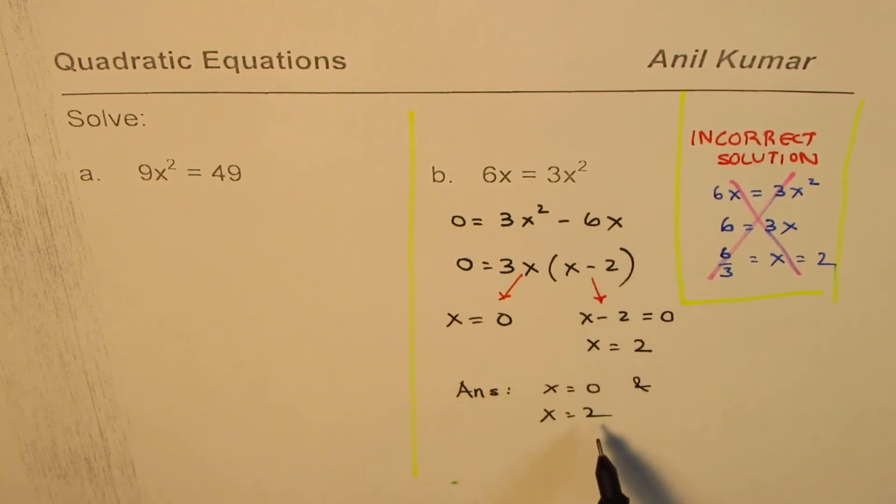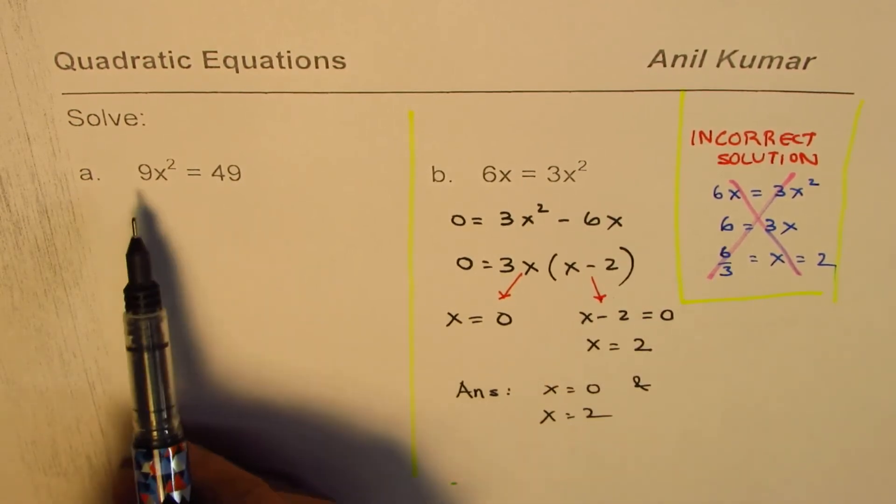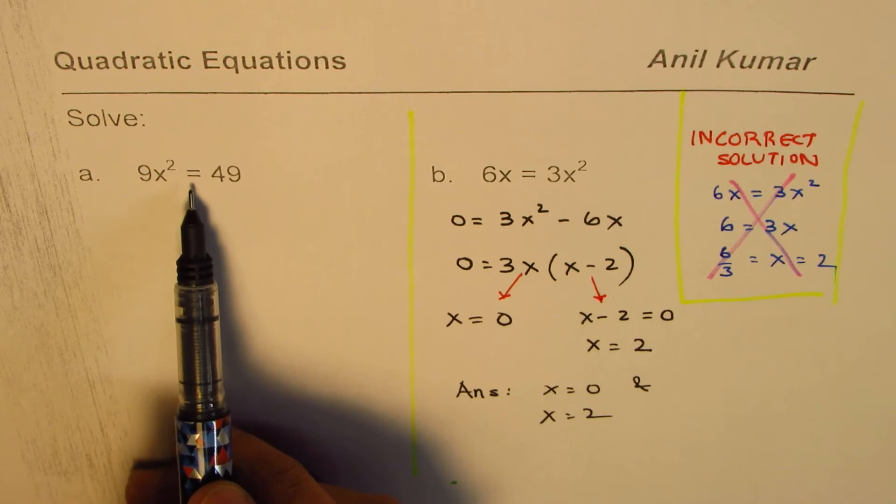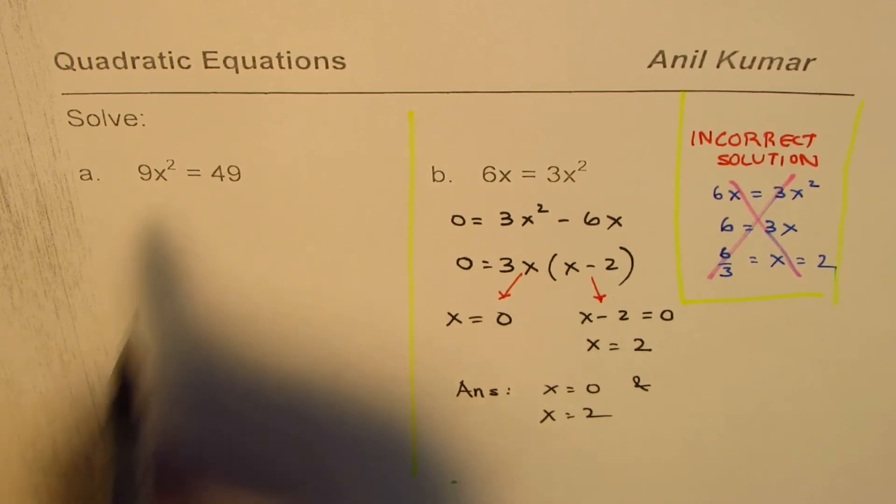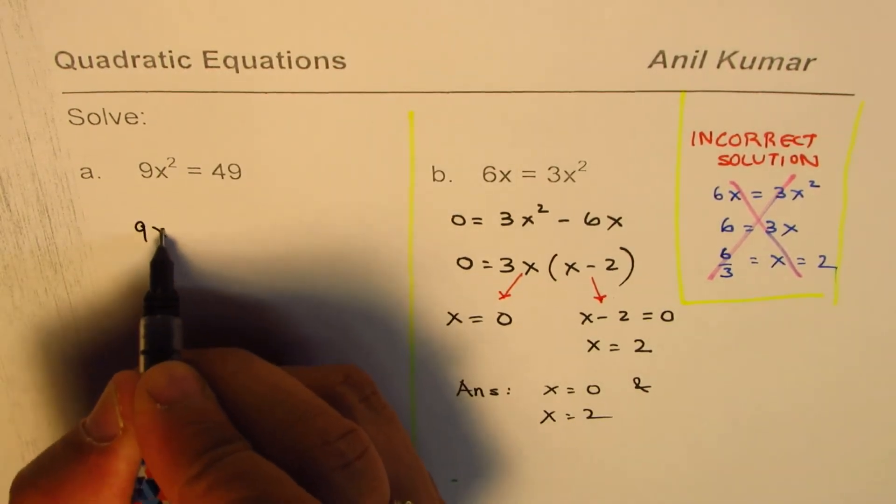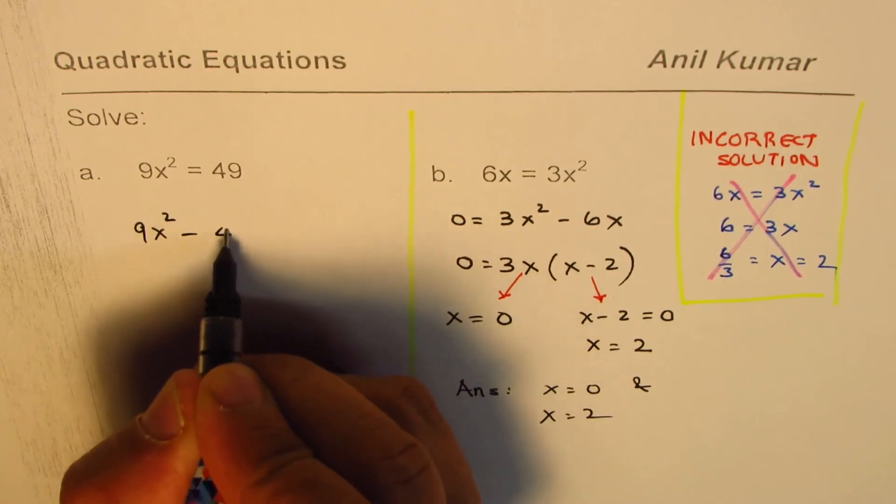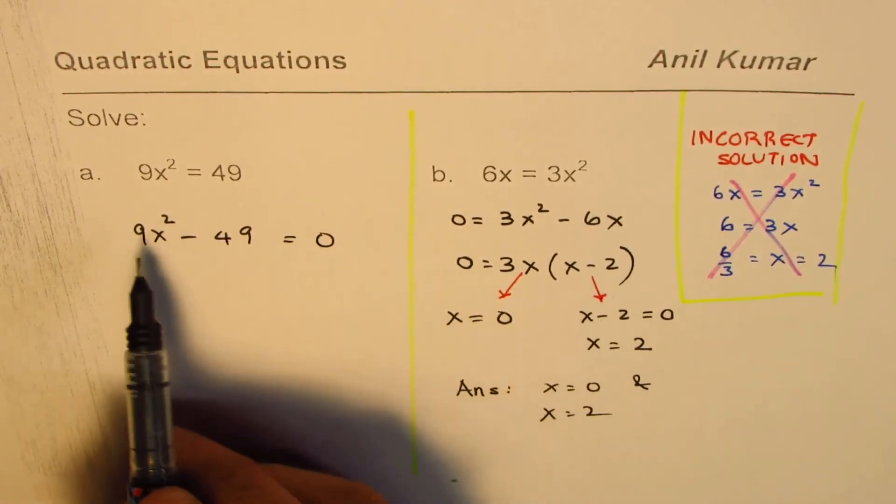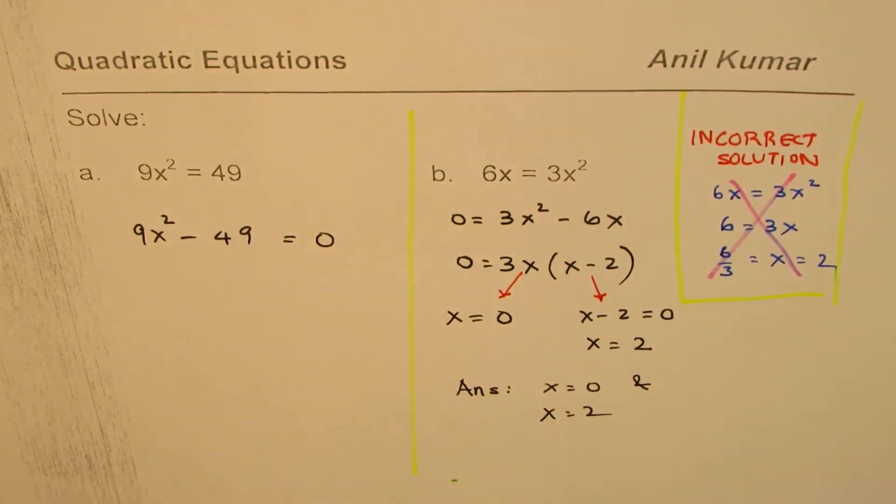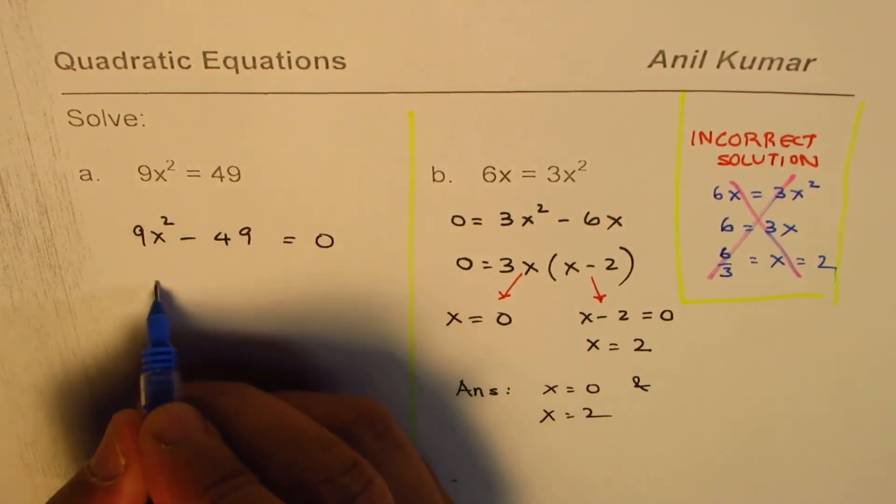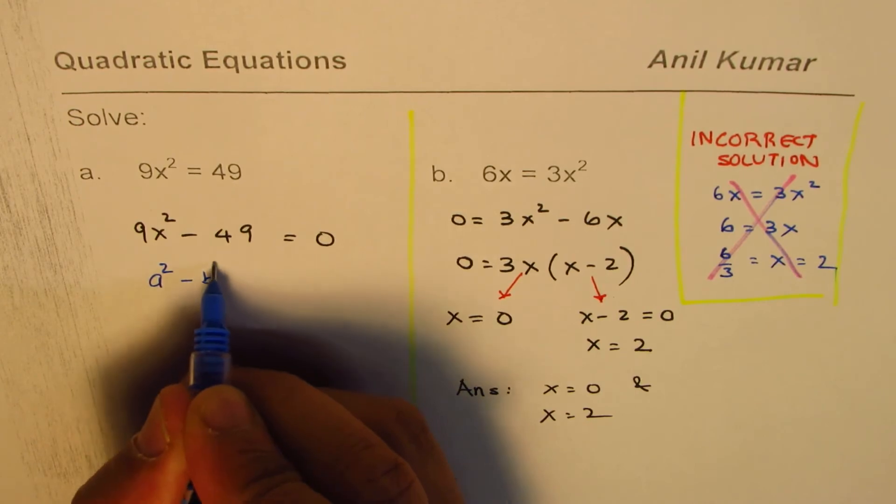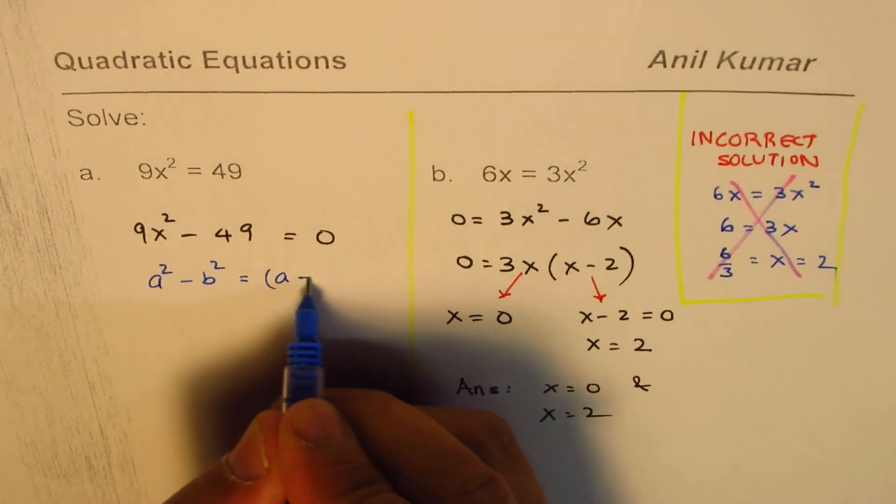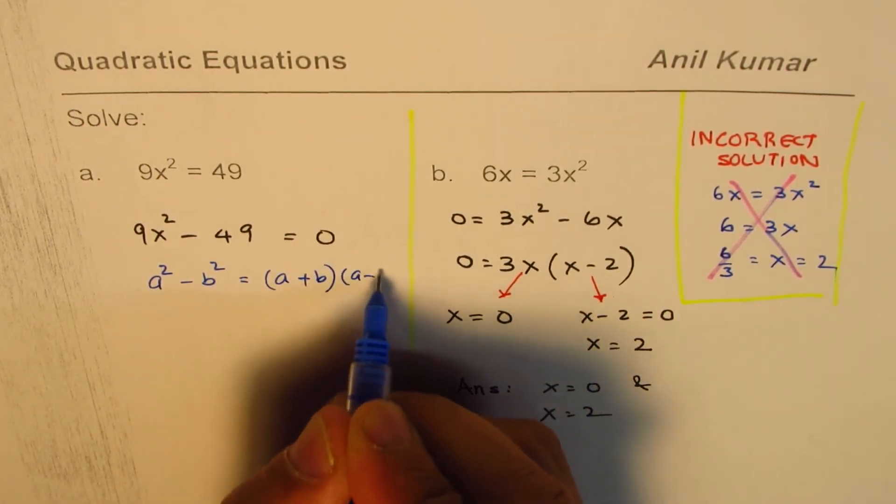Now you follow this technique and find the solution for 9x squared equals to 49. So let's do it. So we have 9x squared minus 49. So bring them to one side and then factor them. This is difference of squares. I hope you remember difference of squares.